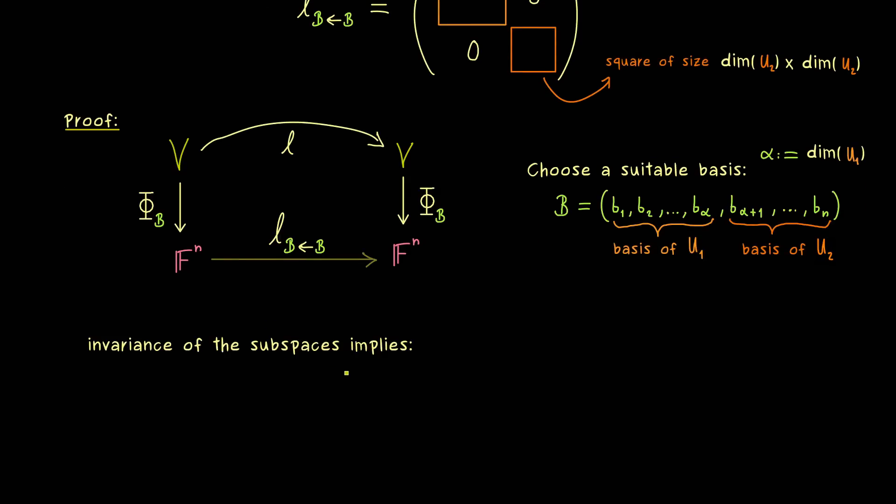Now we can put in our second assumption, which means the invariance of our subspaces. It implies that we know what happens to a vector from the basis B when we put it into our linear map L. It stays in the corresponding subspace. If j is chosen between 1 and alpha, we stay in U1. If we choose the index from the second part, we stay in U2. The invariance tells us we cannot leave the given subspace.